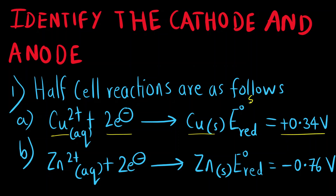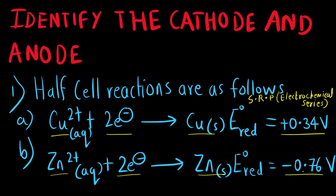The first reaction is Cu²⁺ — copper ion accepts two electrons to form copper metal. These are the standard reduction potential values that we get from the electrochemical series, determined experimentally. The other reaction is zinc ion accepting two electrons to form zinc metal. So, which is the higher value? You have to follow the number line.